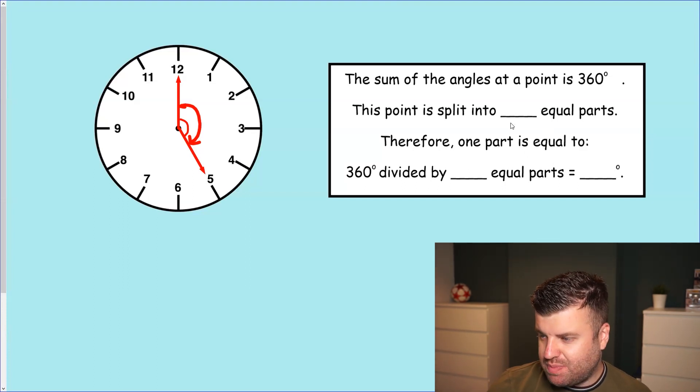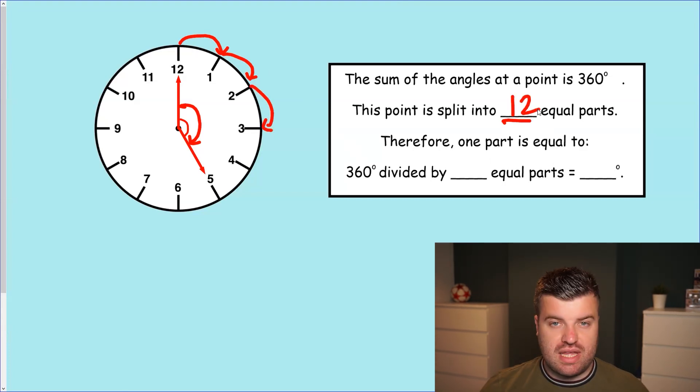And this is where the box comes in handy. So this point is split into how many equal parts? Well, this is where the context of the question is so important. This question is in the context of a clock face. Now we know in a clock face there are 12 numbers, which means there are 12 equal parts to make a full turn. So in the box, I'm going to write down 12. It's split into 12 equal parts. We're not finished yet.